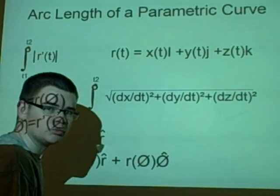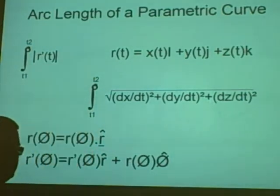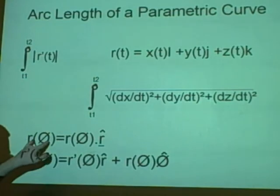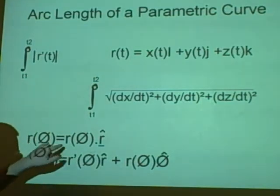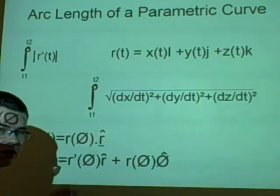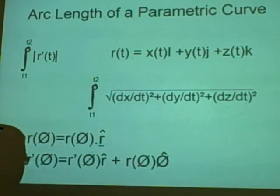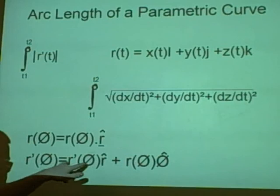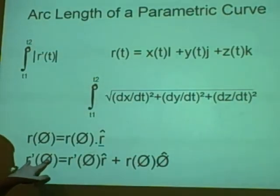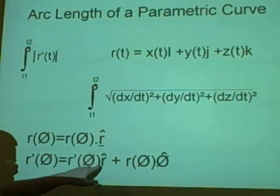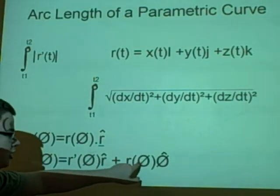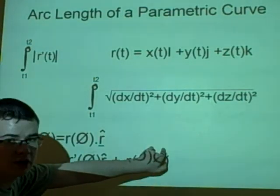You can do the same with polar coordinates. Before we found this equation: we have r of theta equals r of theta times r hat. We differentiated it before in the last slide and we found r prime of theta equals r prime of theta r hat plus r of theta theta hat.